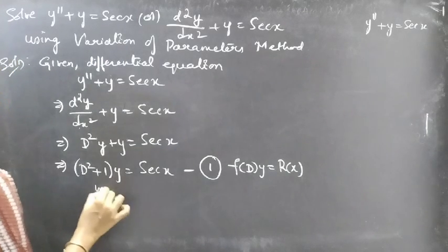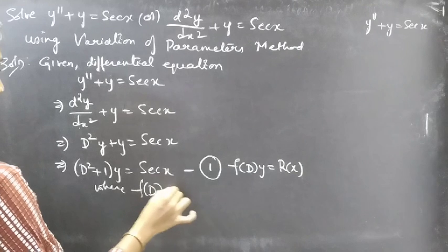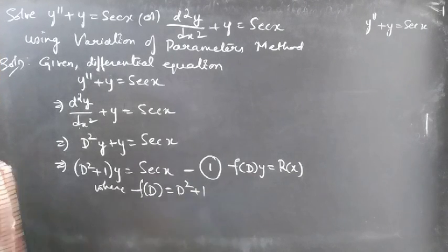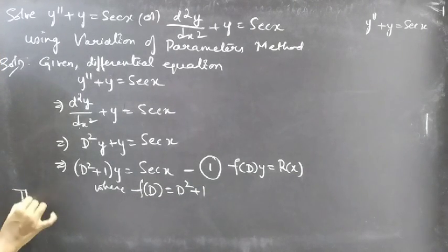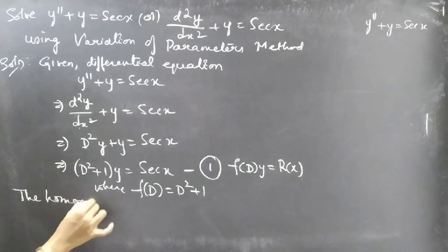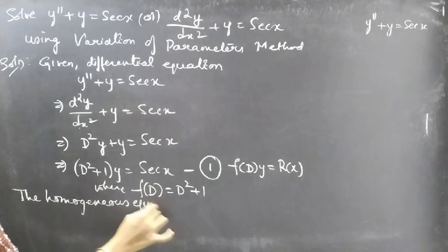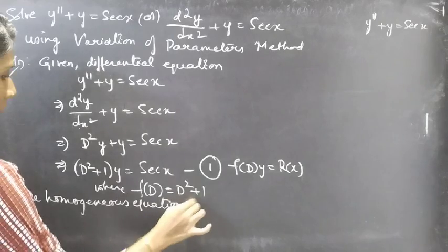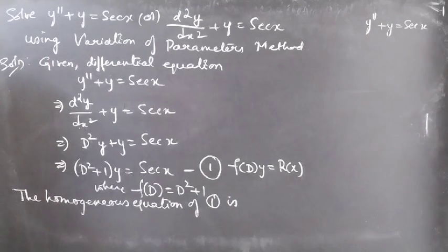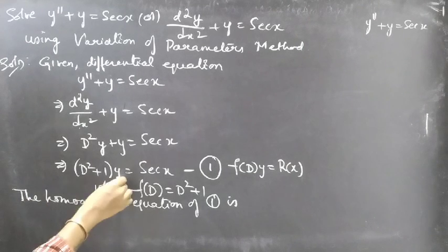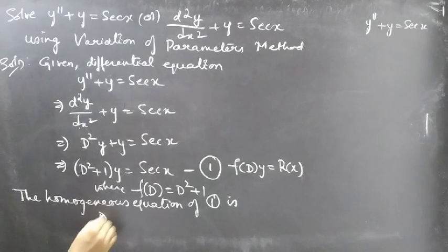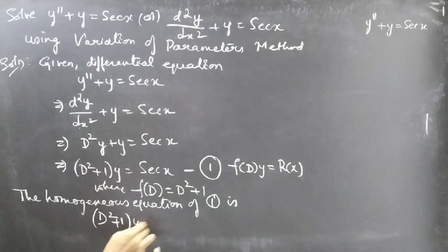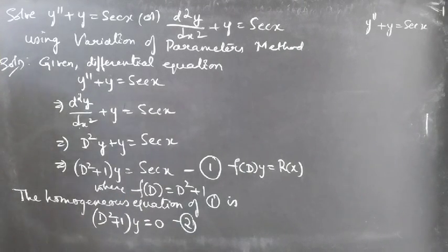Here f(D) = D² + 1. The homogeneous equation corresponding to equation 1 is obtained by setting R(x) = 0, which gives (D² + 1)y = 0. Consider this as equation 2. We now find the solution of this homogeneous equation using the auxiliary equation method.